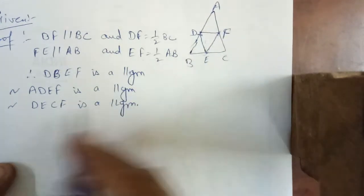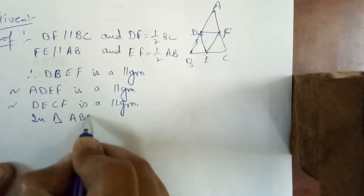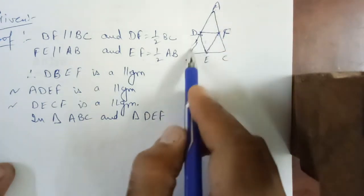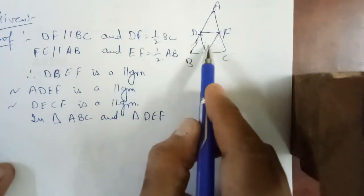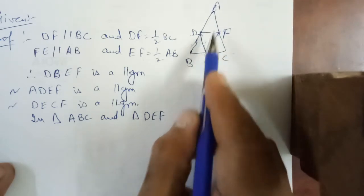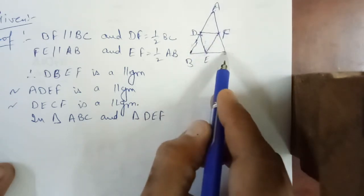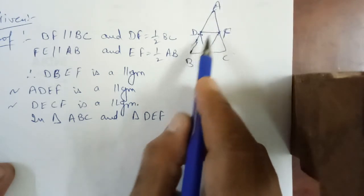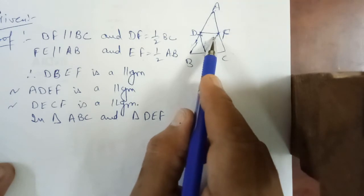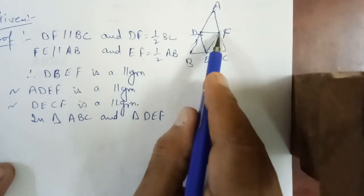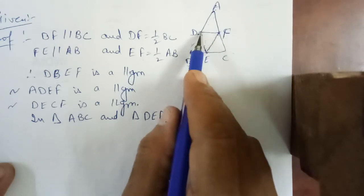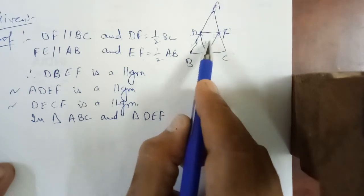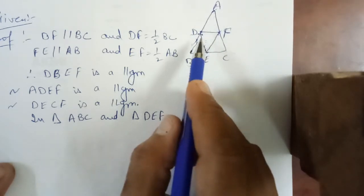We have taken two triangles: triangle ABC and triangle DEF. Since BDEF and DCEF are parallelograms, opposite angles of a parallelogram are equal. So the angles of triangle DEF equal the corresponding angles of triangle ABC.